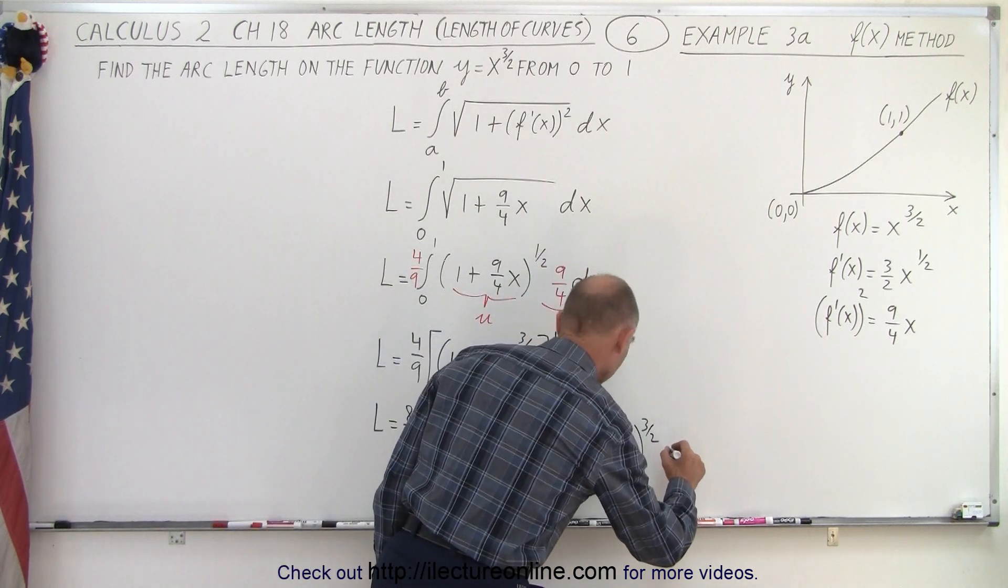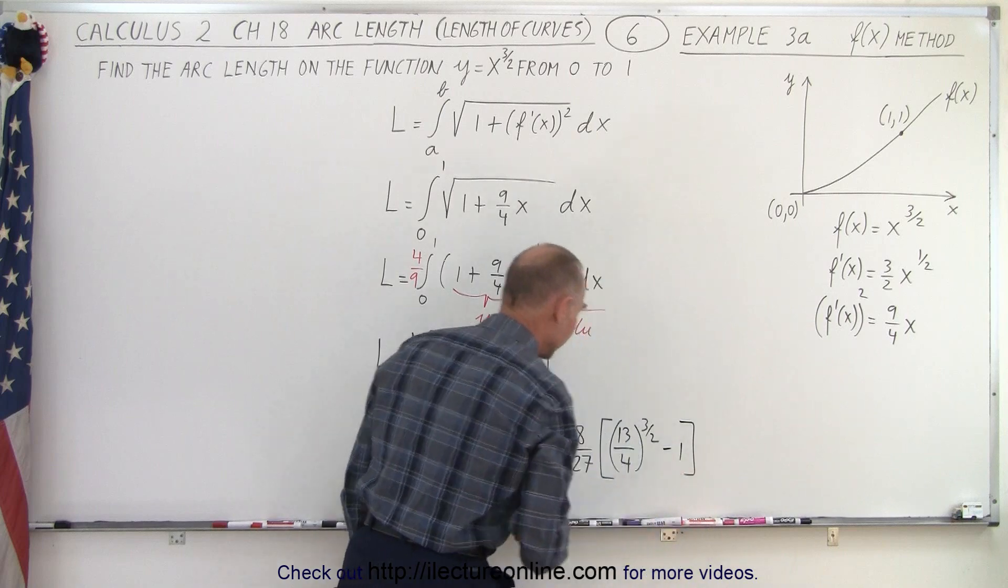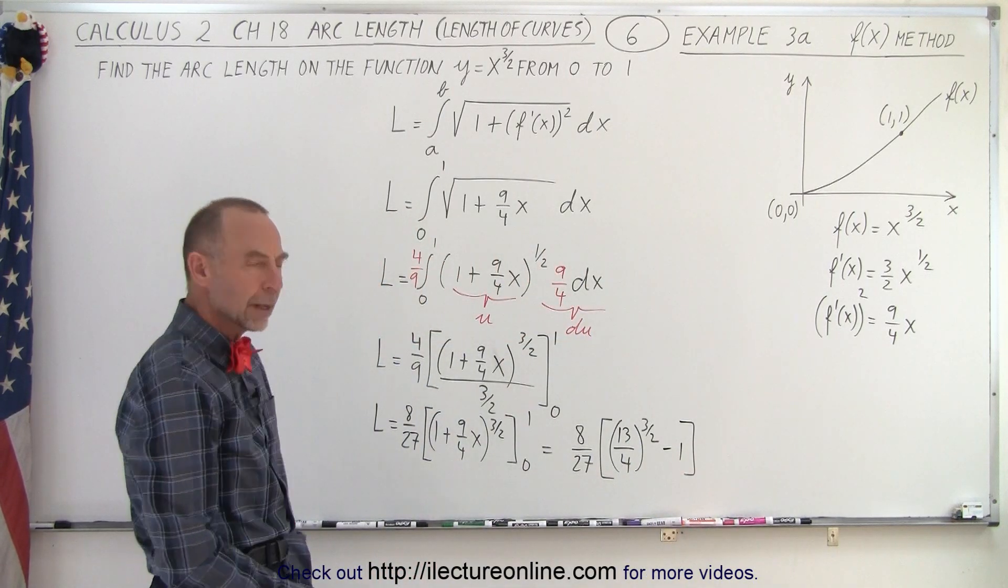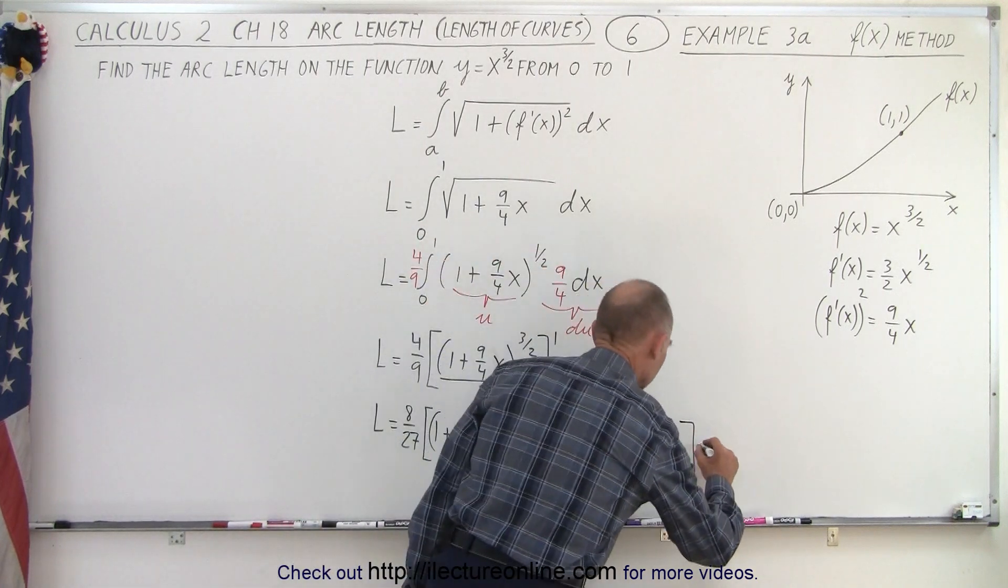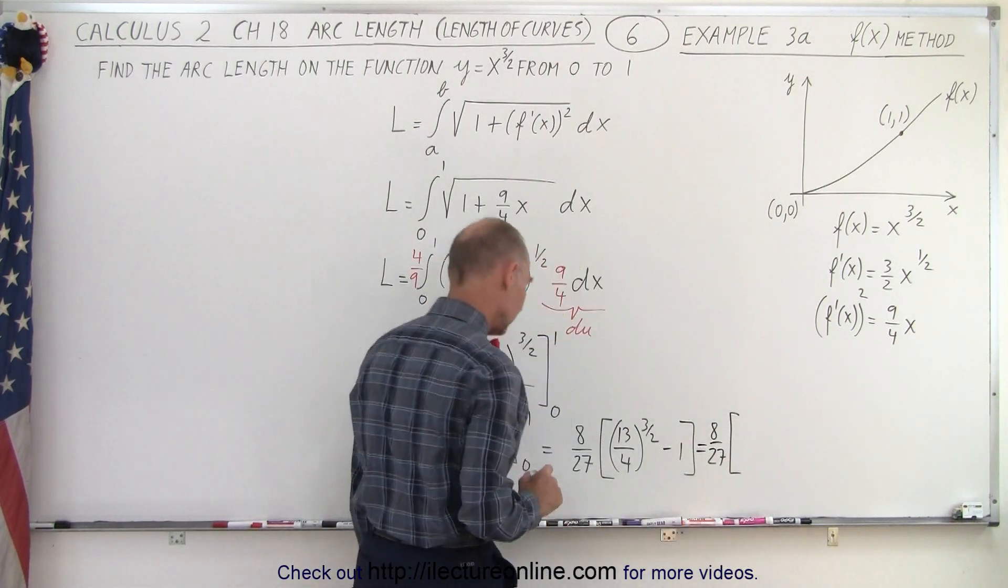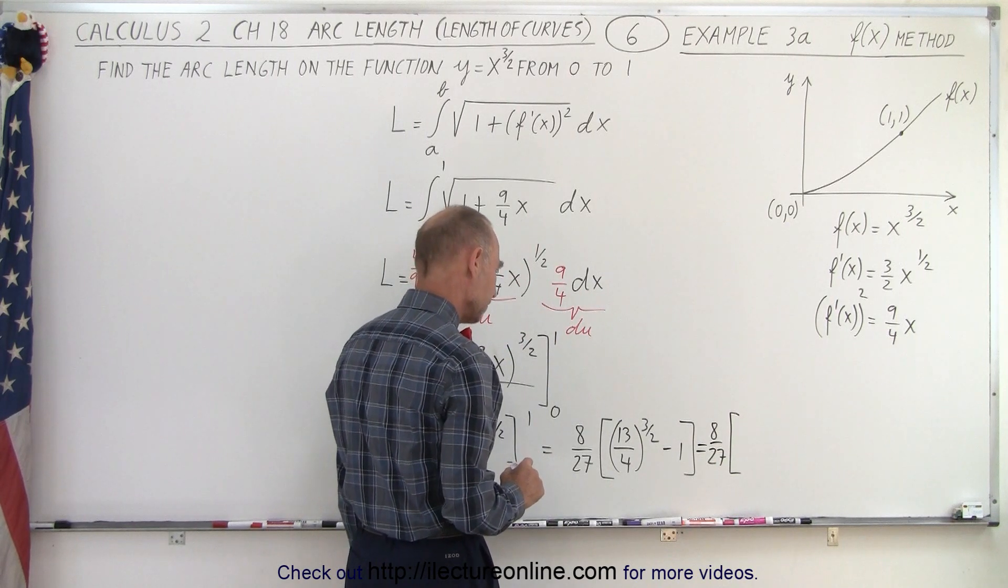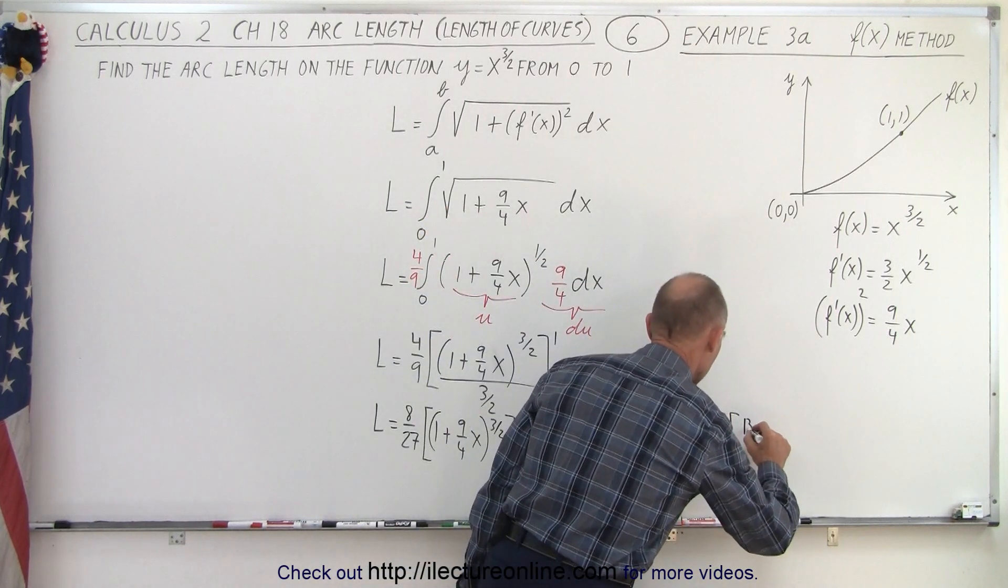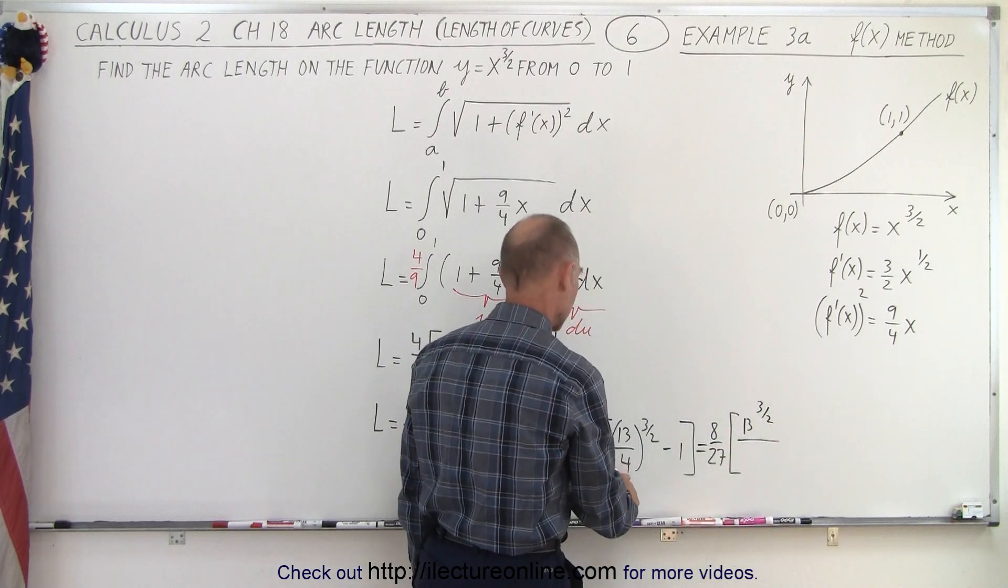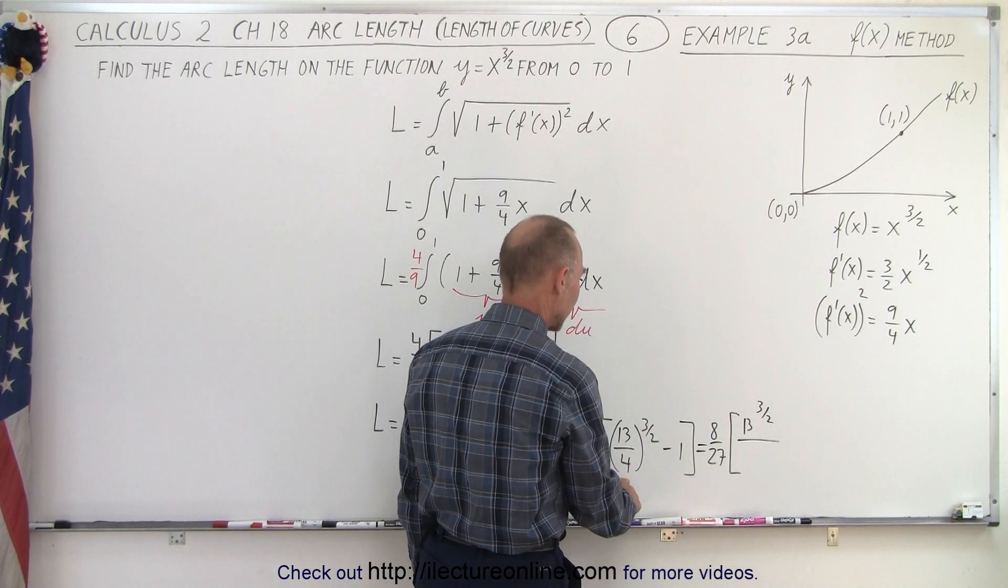And I could probably write it like this so this is equal to eight over 27 times 13 to the three halves power divided by four to the three halves power.